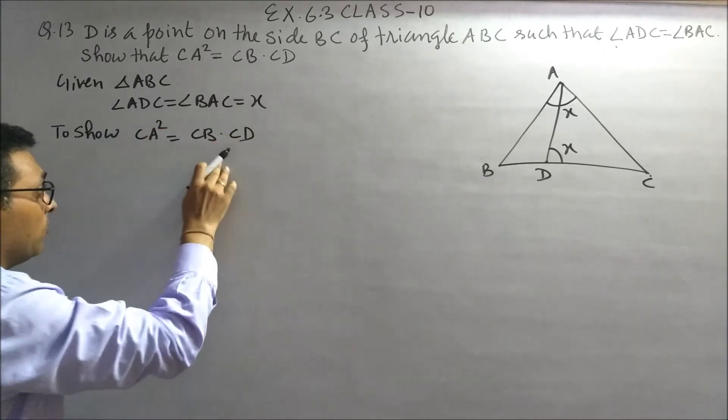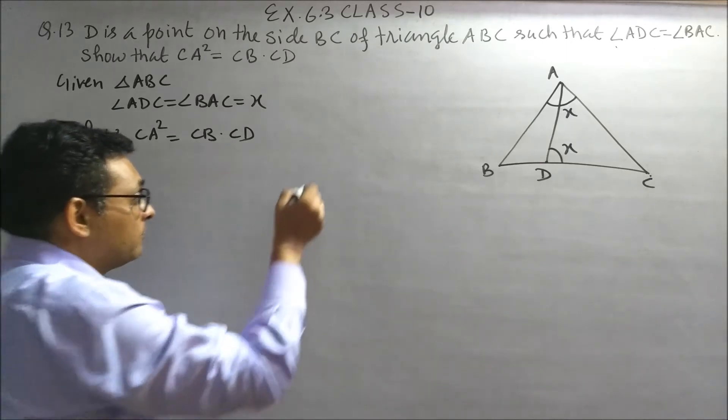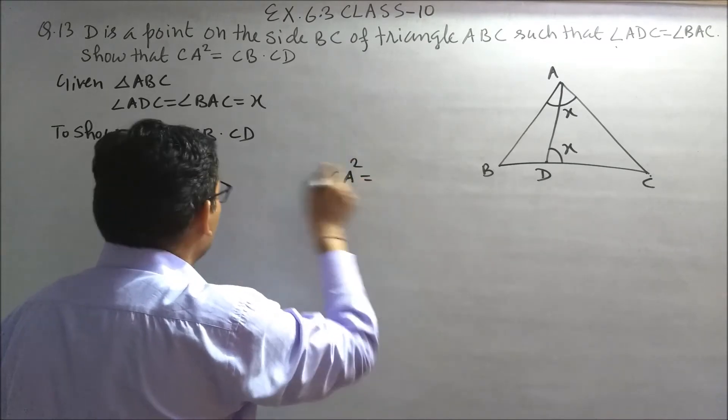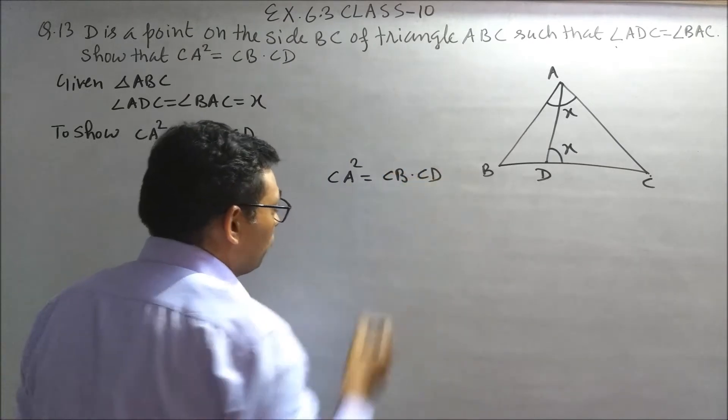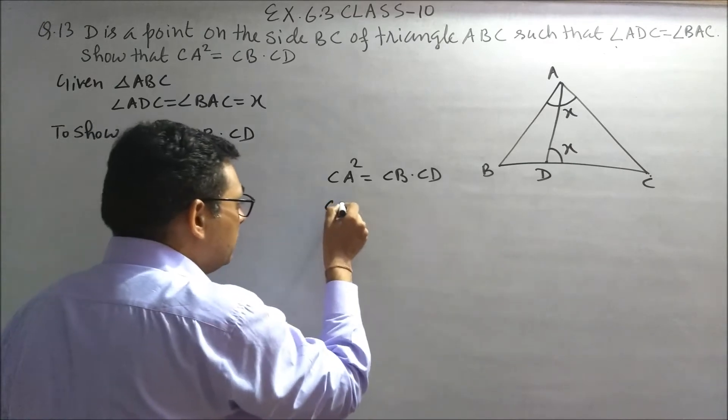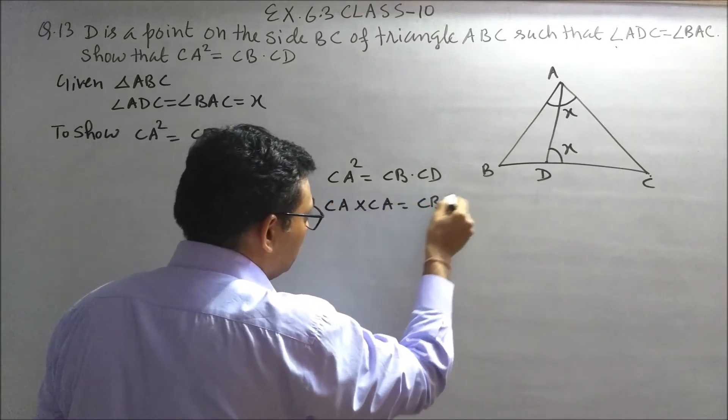Now this result can be written in a different way as well. Let me write it separately. CA square, we are given CB into CD. Let's expand this and write it as CA into CA is equals to CB into CD.